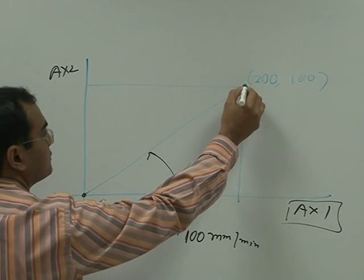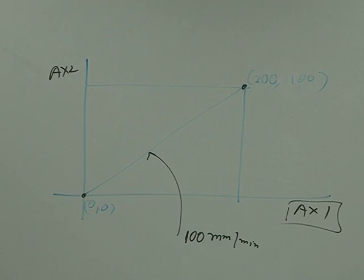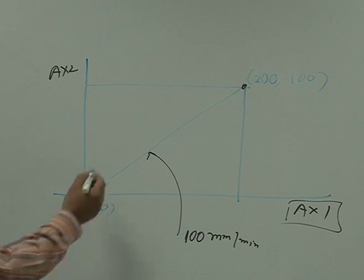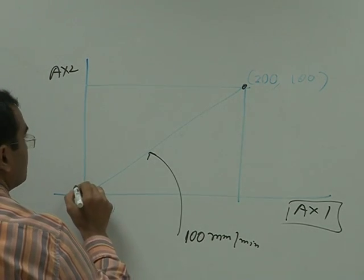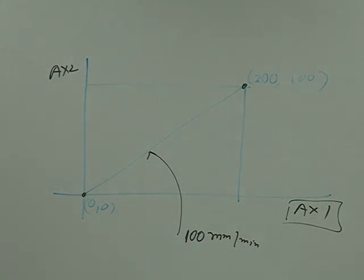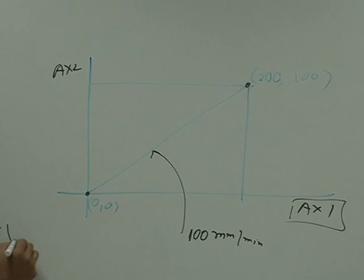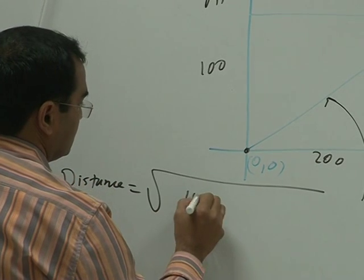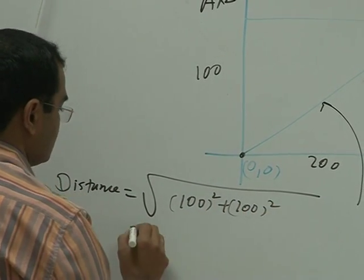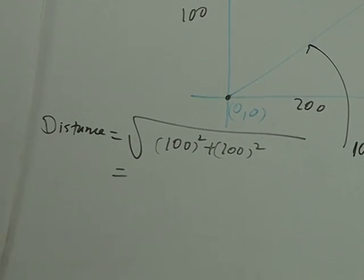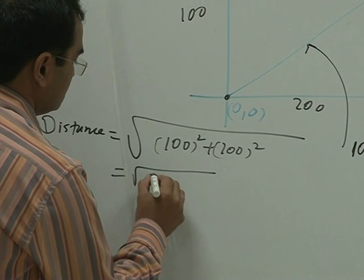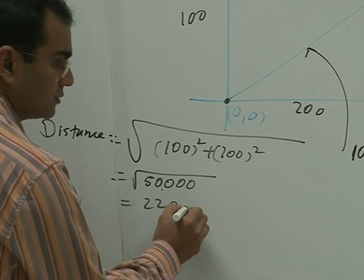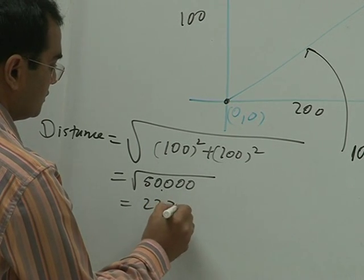First you find out the distance, distance to be travelled by object. What is that distance? This distance, say it is distance is equal to under root, this is 100, this is 200, so 100 square plus 200 square. What is this value? 220 point something, 223.6mm.